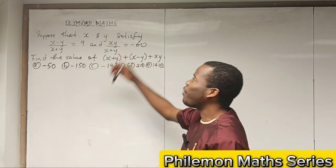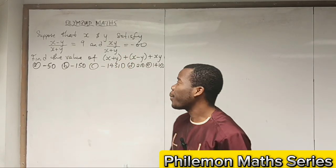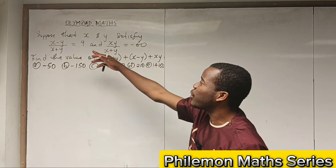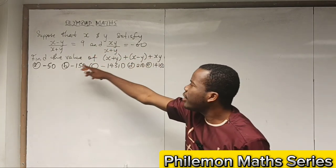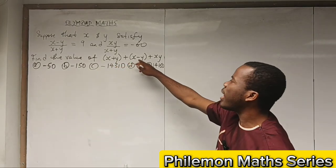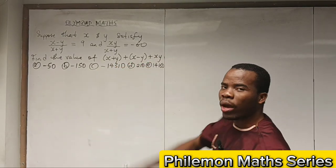Hi friends, we are going to solve an interesting Olympiad math problem today. The question says suppose that x and y satisfy these equations: x - y = 9(x + y) and xy = -60. Find the value of (x + y) + (x - y) + xy.